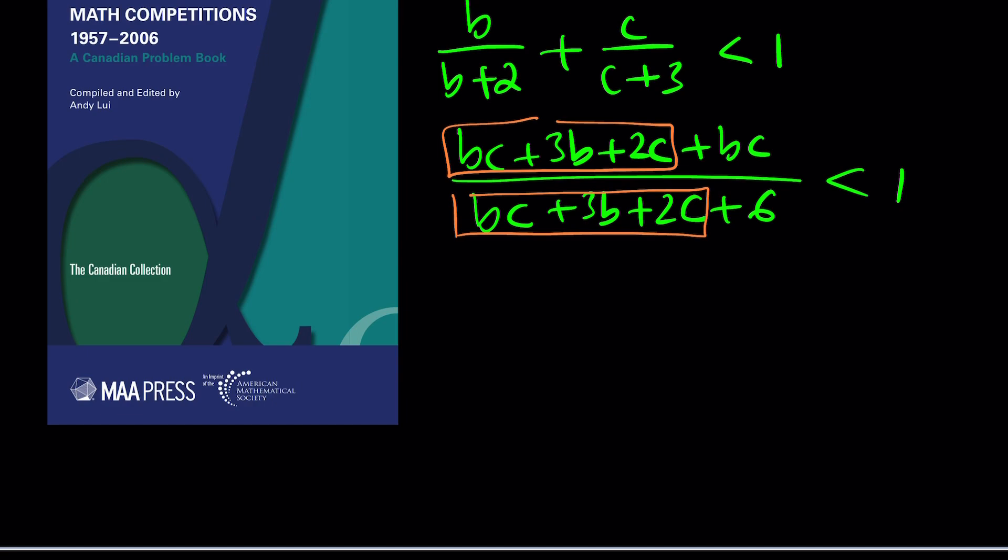If it doesn't mean anything to you, I'm just going to cross multiply, but I want to keep this as a block. So cross multiply, and you can do it because everything is positive. This gives us bc plus three b plus two c plus bc is less than bc plus three b plus two c plus six. A lot of things are going to cancel out. This means bc is less than six.